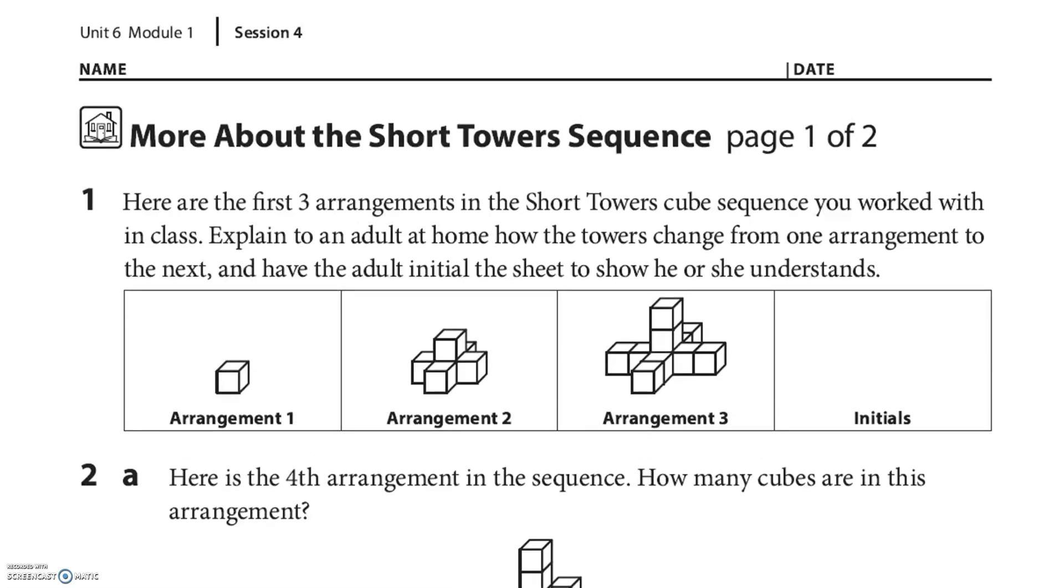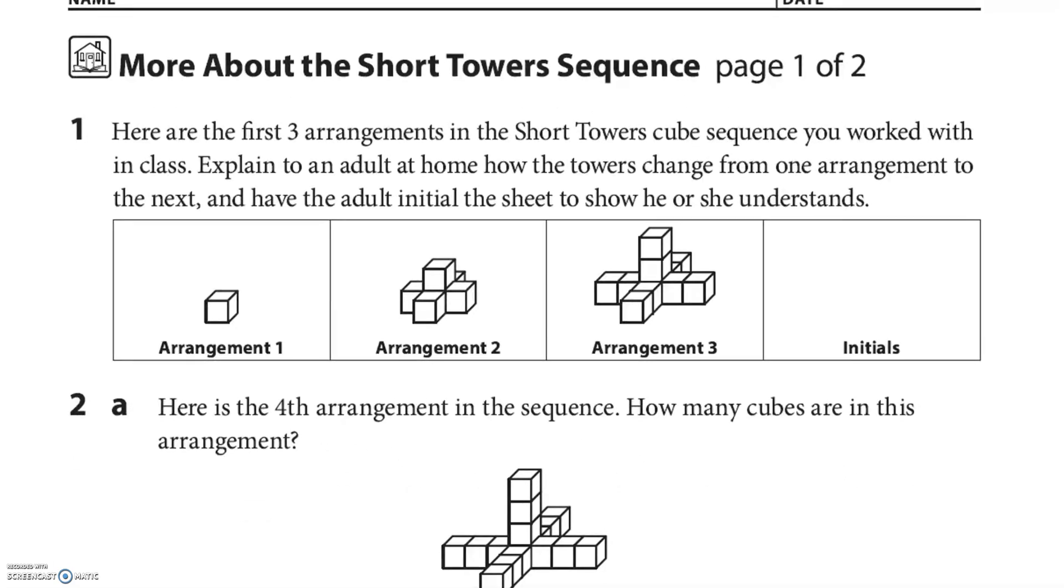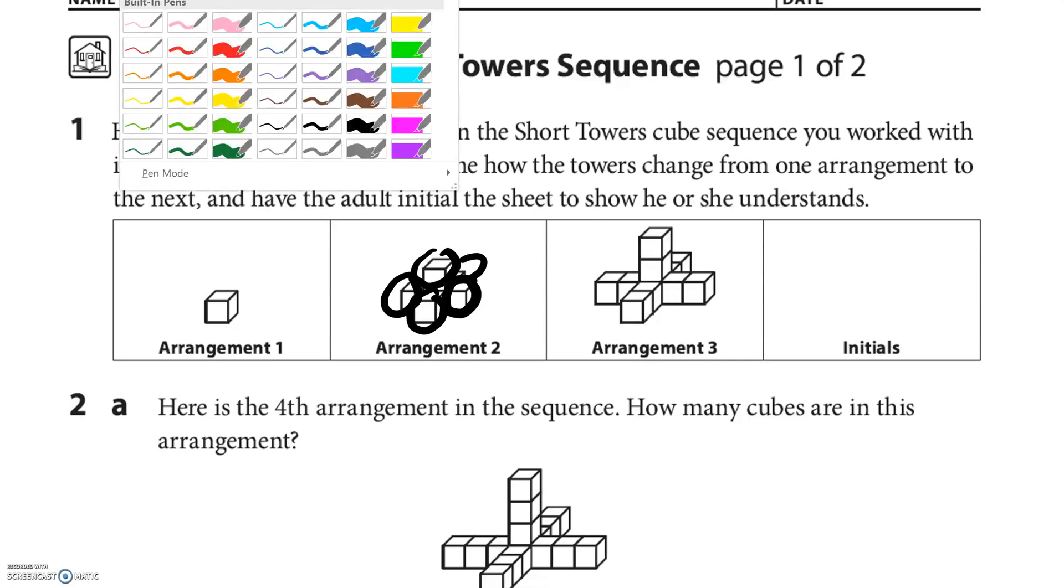The first three arrangements in this Short Towers cube sequence are right there. We did this in class about a week ago, maybe a little less than that. Explain to an adult at home how the towers change from one arrangement to the next and have the adult initial the sheet to show that they understand. A couple things that some people noticed were that every arm, there's one back there too, was growing by one.